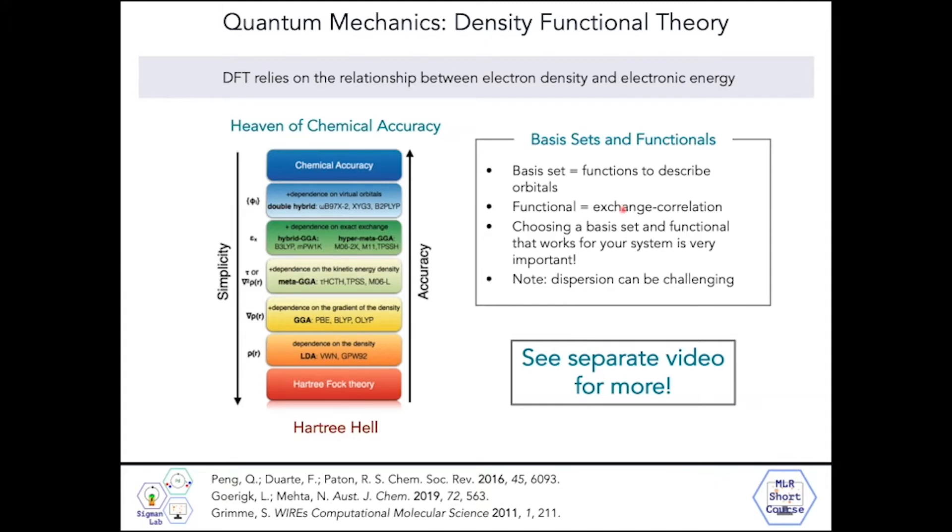If you want to put this in the context of the Schrodinger equation, essentially your functional is that Hamiltonian and your basis set is approximating the wave function. Choosing a basis set and functional that works for your system is very important.